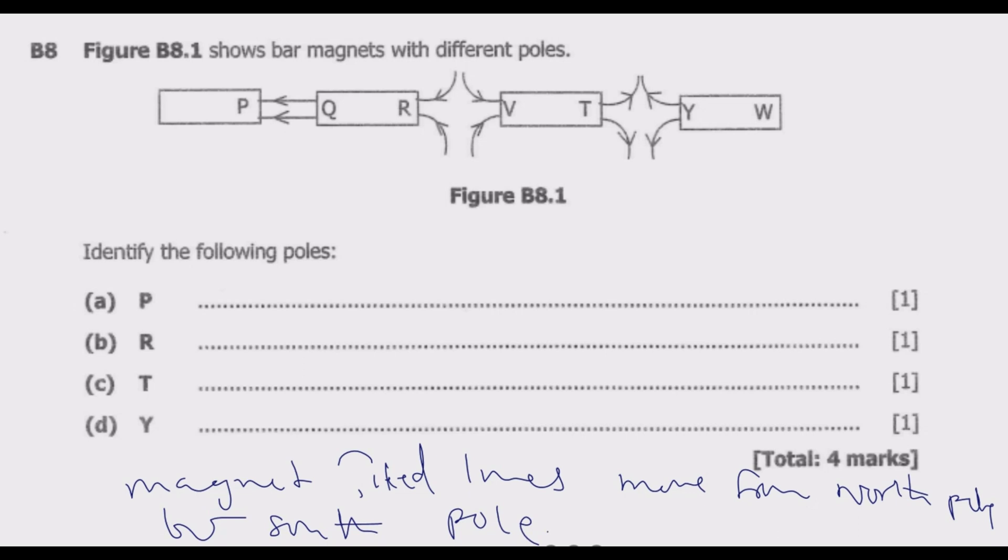Let us look at P. P, the magnetic field lines are entering. So if they're entering, this is a south. Then they're coming out from Q. So Q should be north.